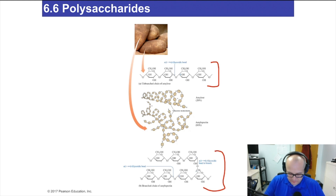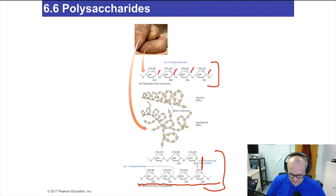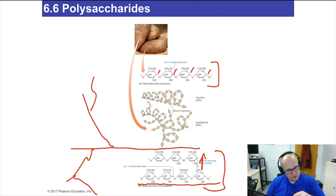Here's amylose and here's amylopectin. Alpha-glycosidic bond, alpha-glycosidic bond — it just keeps going. This is amylose, and there's that curly coil I was telling you about. This is amylopectin down here — a bunch of glucose molecules going one way, and right here is a branching point where another set of glucose molecules forms, and it'll just keep branching off. Very complicated, but it stores glucose very efficiently. Amylose is the simpler version; amylopectin is the more complicated version, but they're both made of glucose with alpha-glycosidic bonds.